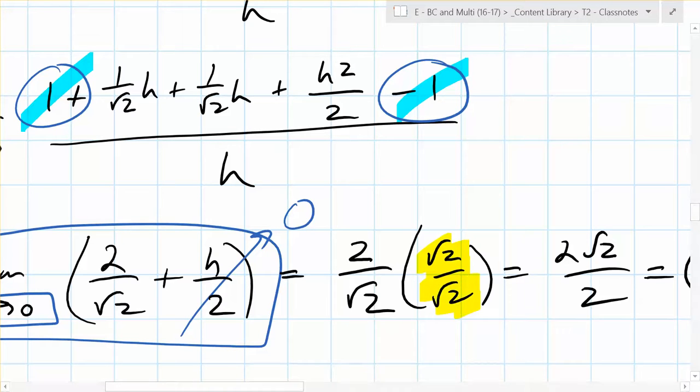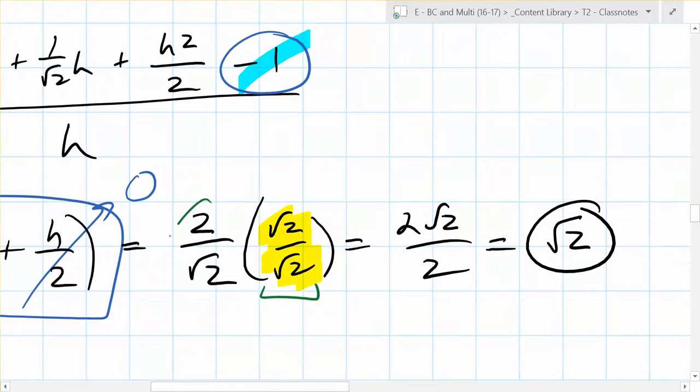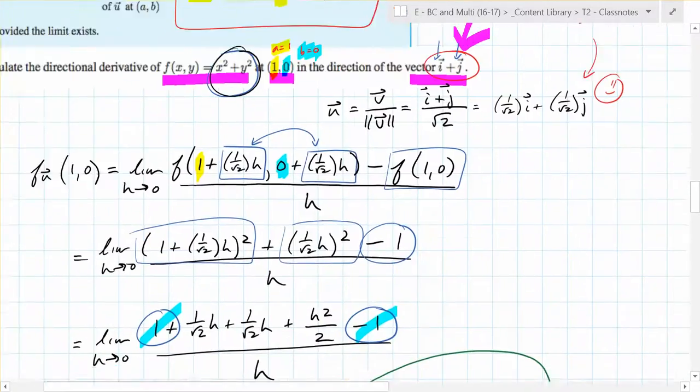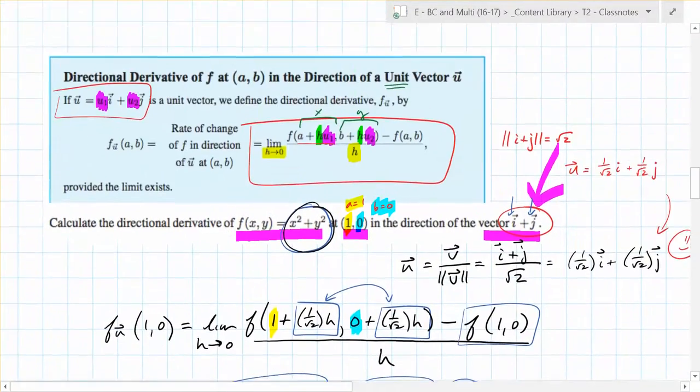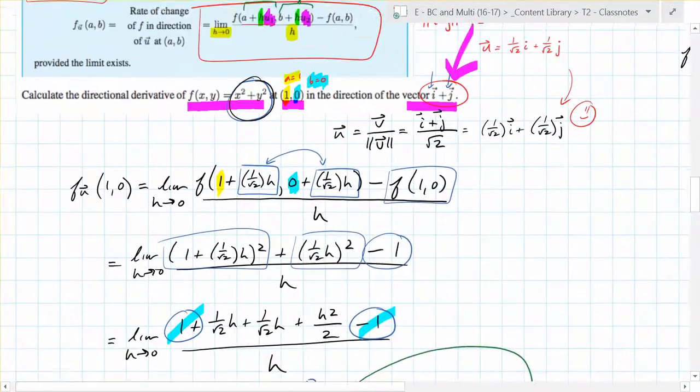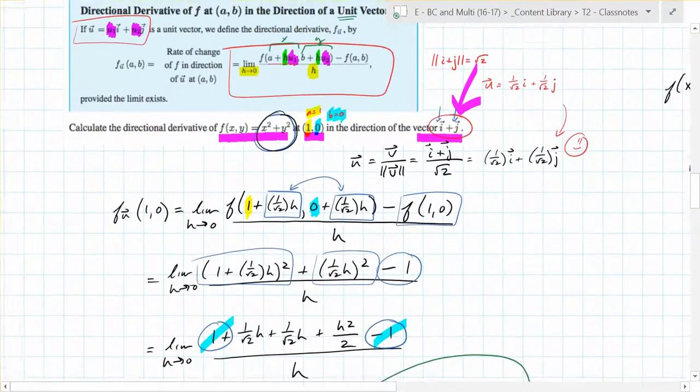This goes to zero. And what am I doing right here? Why am I multiplying by root 2 over root 2? What's that called? What am I doing? I am rationalizing the denominator. It's just nice because 2 over root 2 actually turns out to be the square root of 2. That's kind of cool. It cancels. So you didn't need a calculator to find the rate of change in that direction. How are we feeling about this algebra right here? It's not bad.